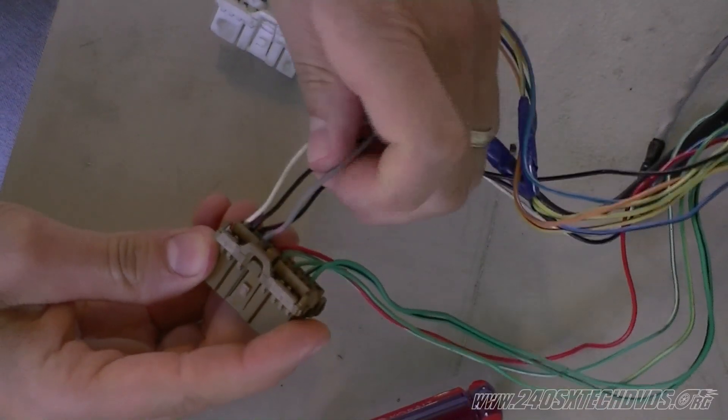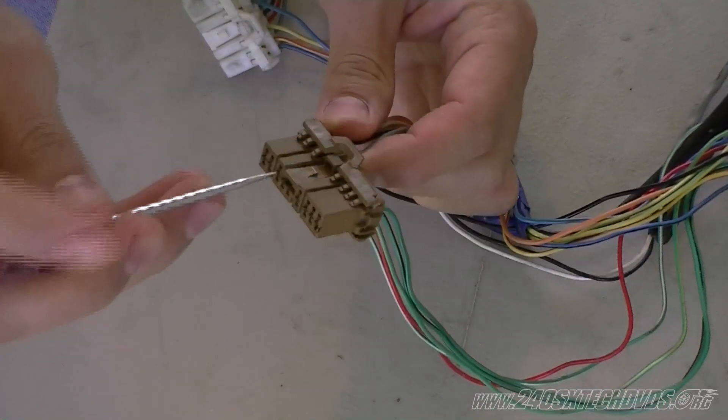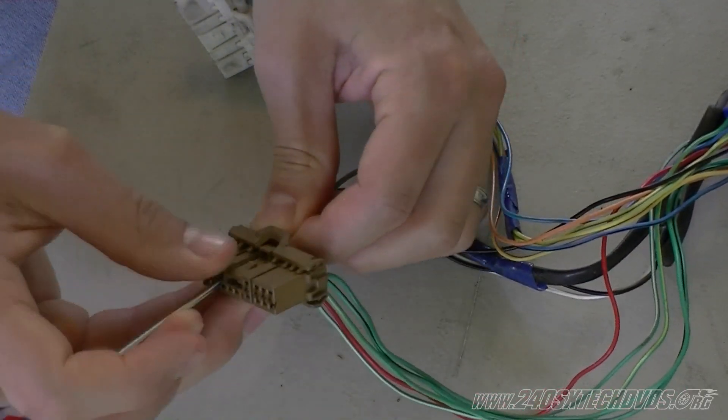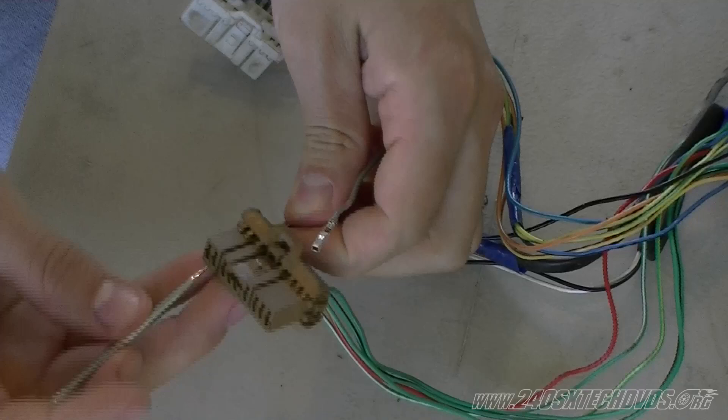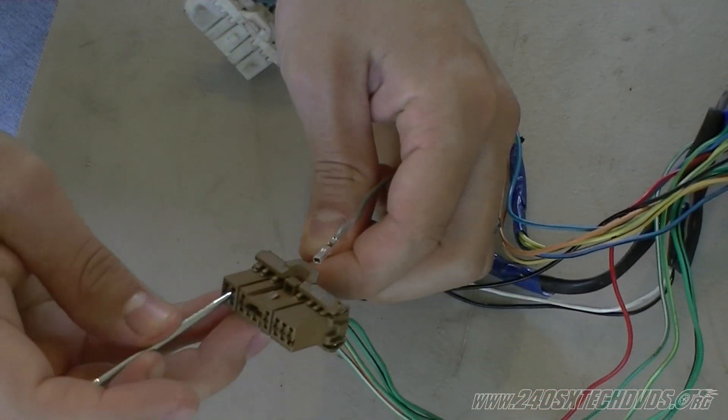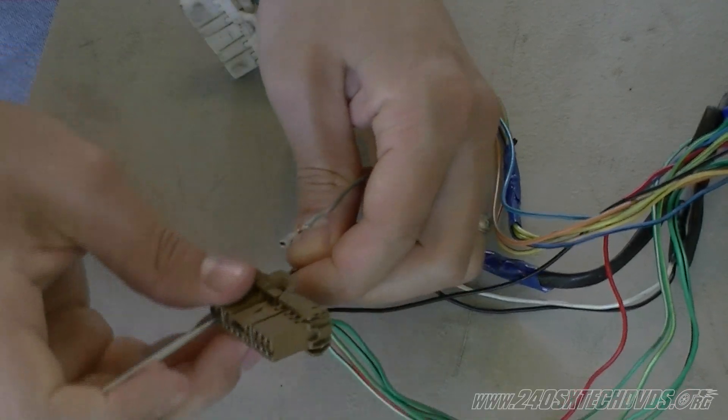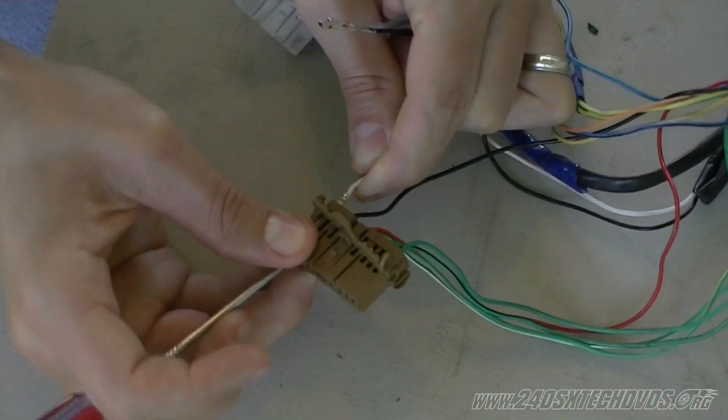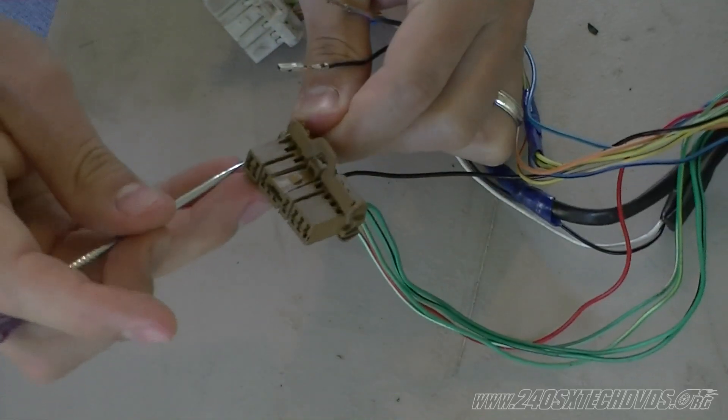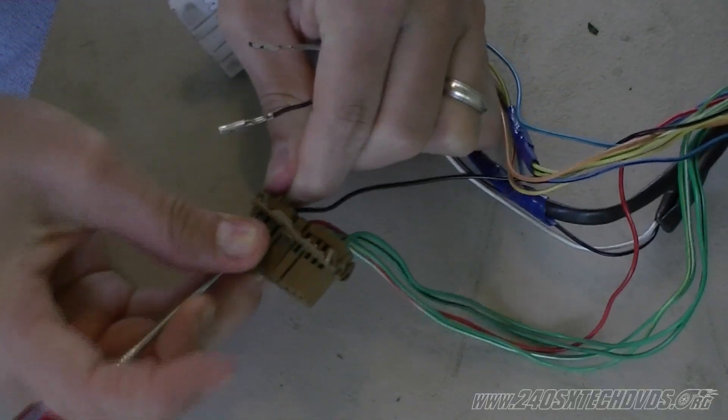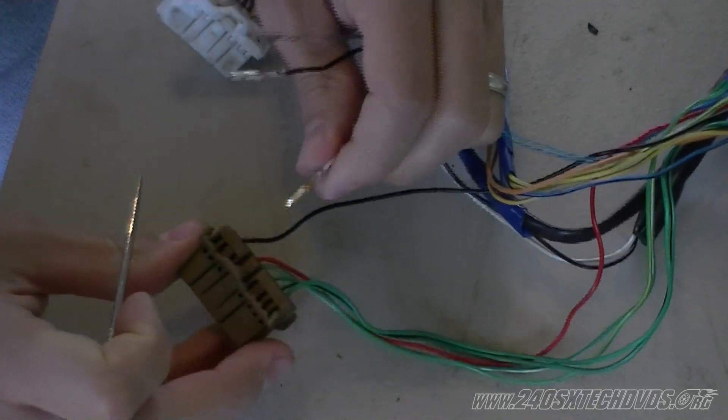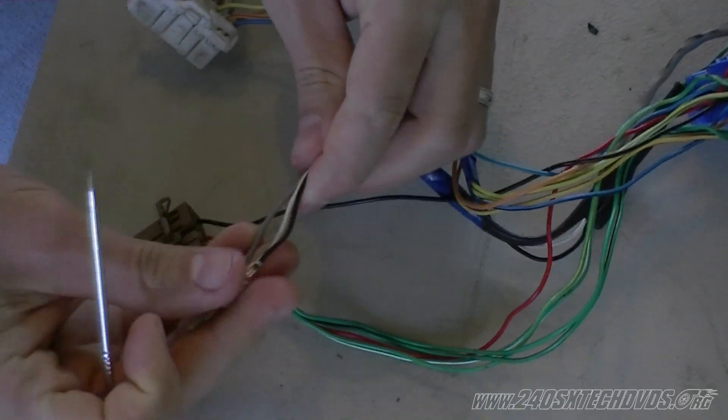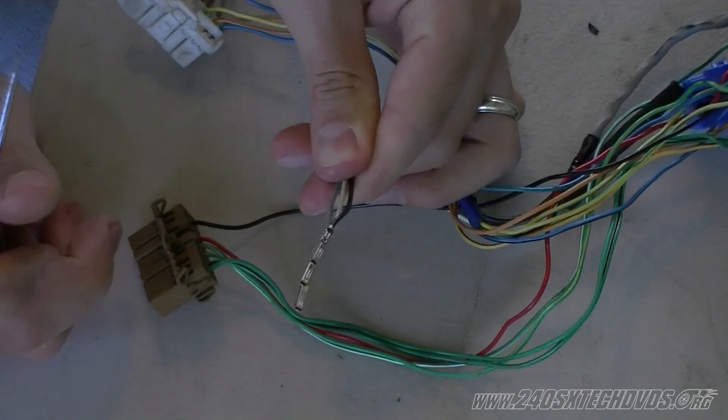Now we're going to remove the gray, the black, and the white wire off the dual overhead cam plug because we're not keeping ABS. Now what we'll do is we'll cut these off at different lengths so they do not touch each other, and then we'll tape them together so they don't touch anything and short anything out.